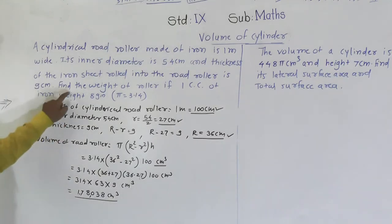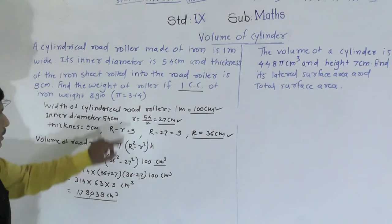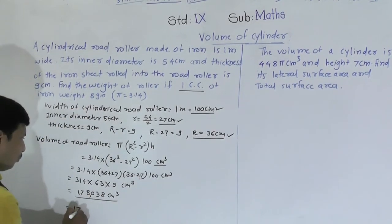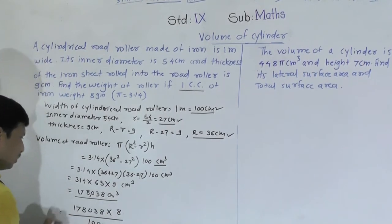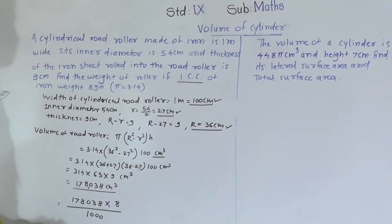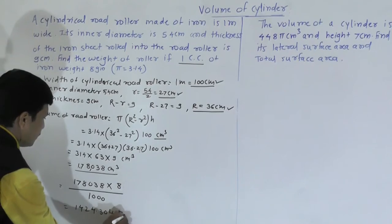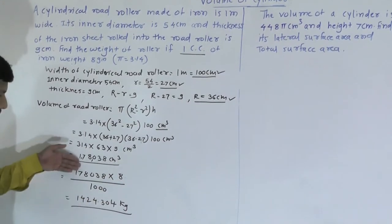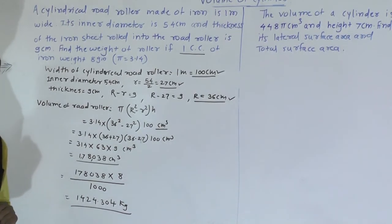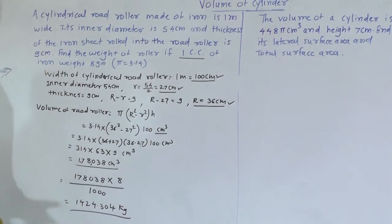Now, the question asks us to find the weight of the road roller if one cubic centimeter of iron weighs 8 grams. We multiply the volume by 8 grams and divide by 1000 to convert to kilograms at the same step. After calculations, we get 1424.304 kilograms. We divide by 1000 because the weight was given in grams and we need to express the answer in kilograms.